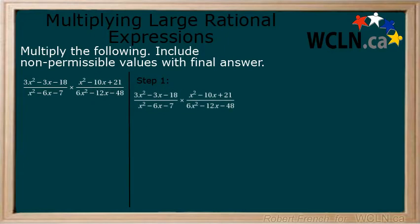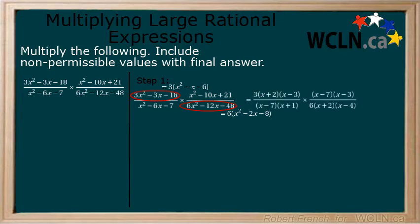Factor the numerators and denominators. First, we can factor out a common factor of 3 from our numerator here and 6 from our denominator here. Now, we can factor our trinomials. A quick look and we see that the expressions are completely factored.